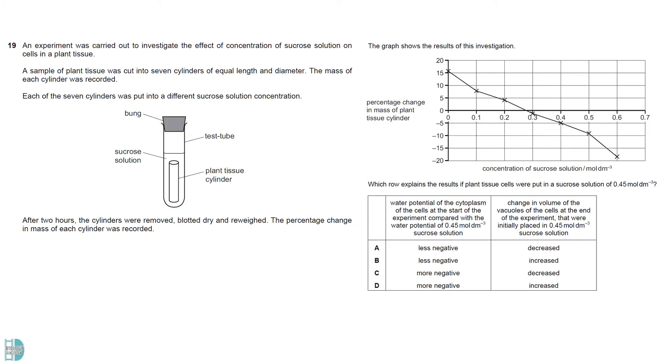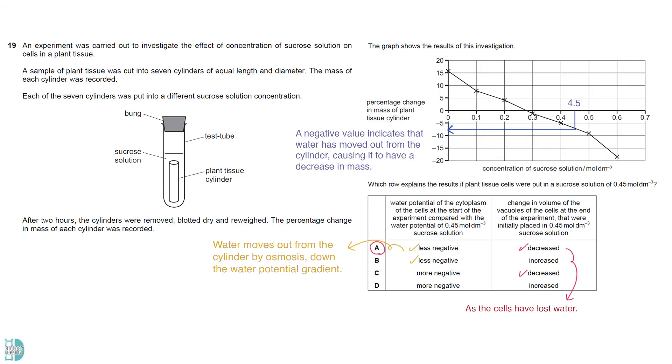When the potato cylinder was immersed in the 0.4mol per dm3 solution the percentage change in mass was a negative value. This indicates that water has moved out from the cylinder causing it to have a decrease in mass. So the water potential of the cytoplasm at the start of the experiment is less negative than the solution which is why water moves out of the cell by osmosis. At the end of the experiment the volume of the vacuoles would decrease due to a loss of water.